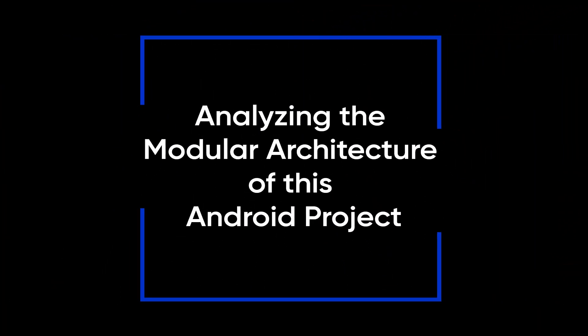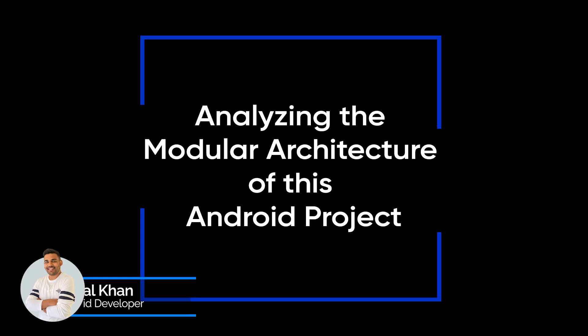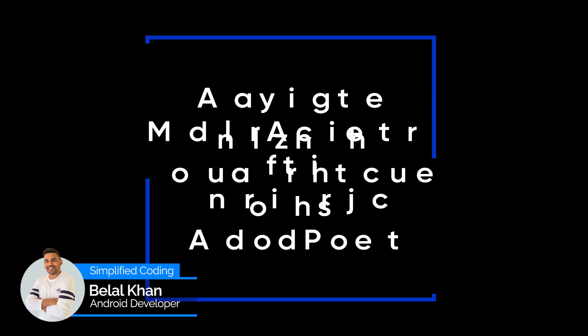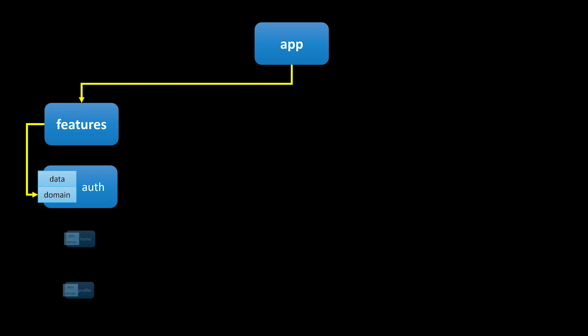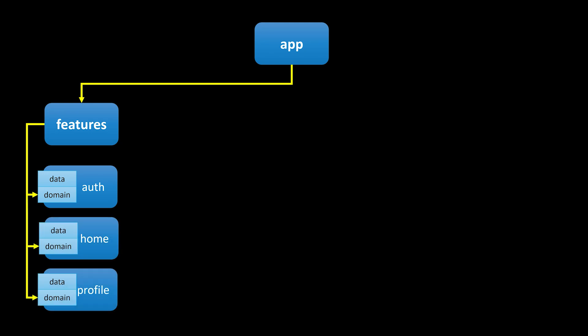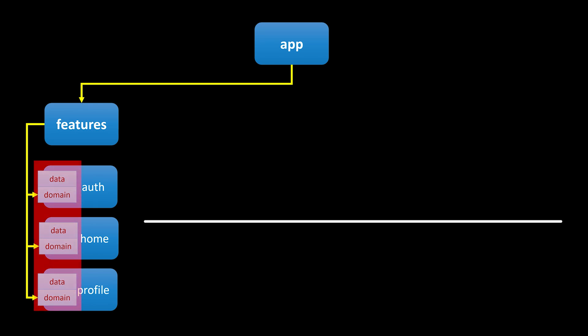In this video we are going to talk about how we have organized our application. Our main module is called app, and inside this module we have got different modules. Right now we have created this auth module under features. Each feature module has two sub-modules: data and domain.